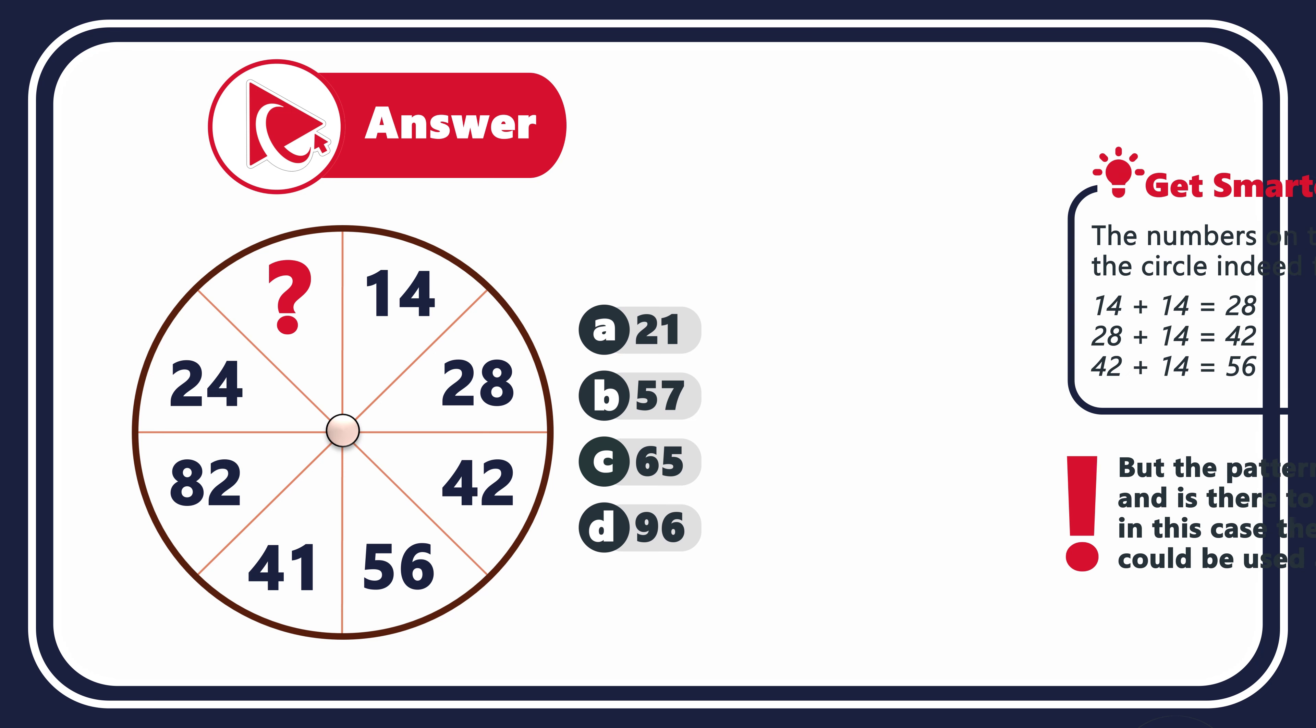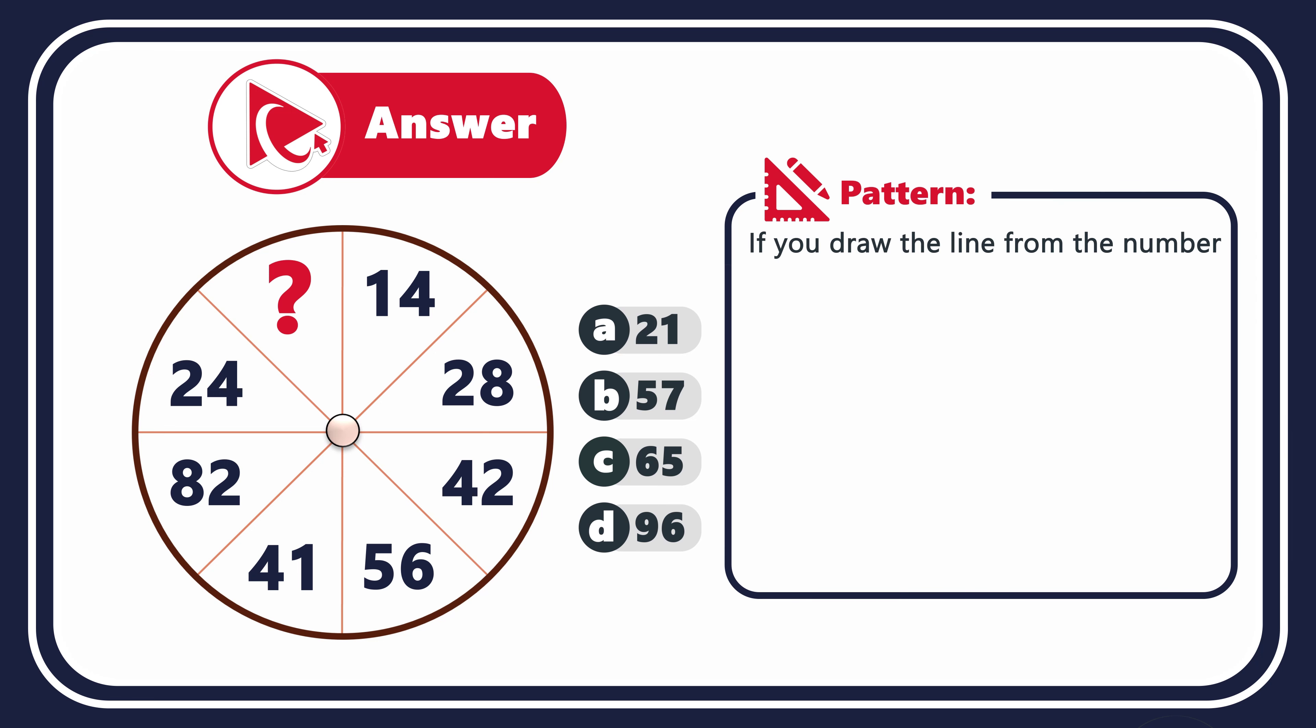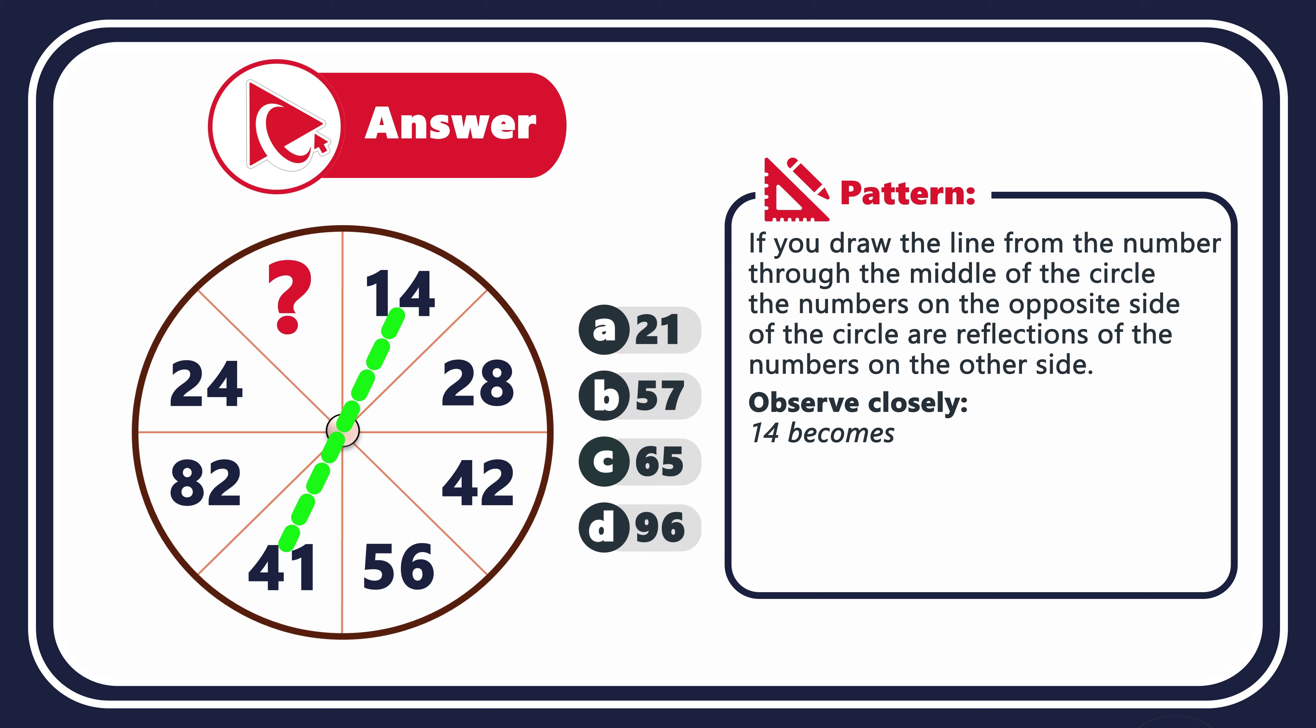So what is the right solution? Take a look at the circle in the middle. If you draw the line from the number through the middle of the circle, the numbers on the opposite side are reflections of the numbers on the other side. Let's take a close look. For example, 14 becomes 41, 28 becomes 82, 42 becomes 24, and 56 then becomes 65. So the correct answer here is choice C, 65.